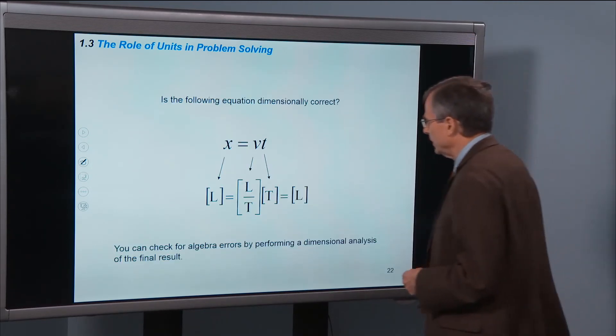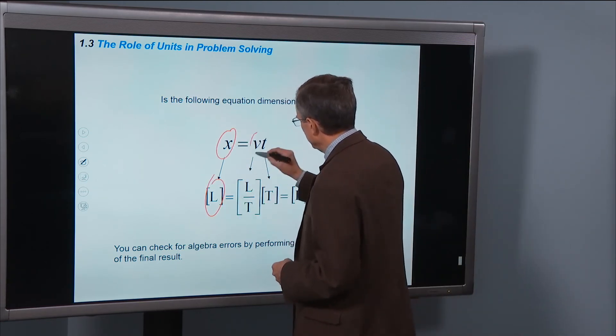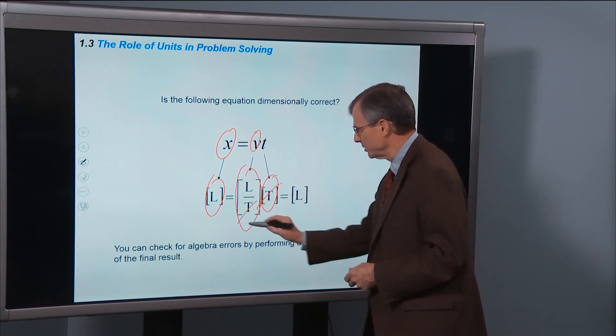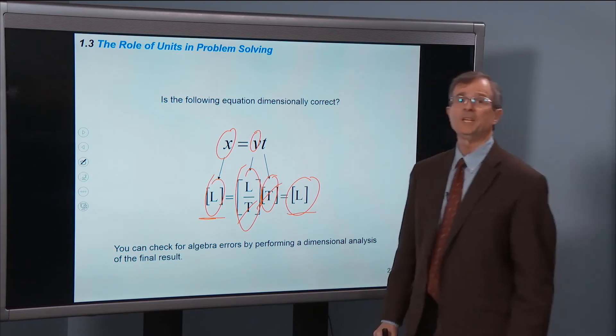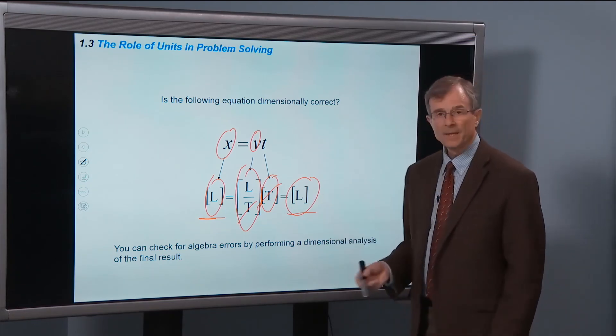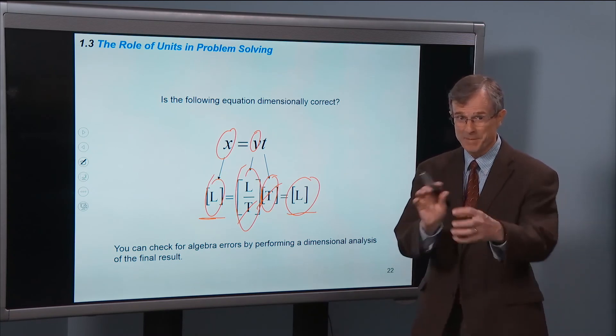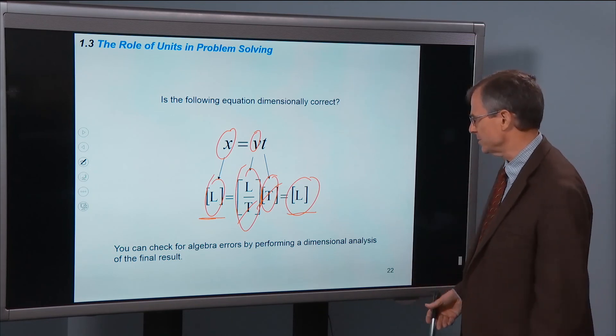How about this one? Unit of length, unit of velocity - a length divided by time times unit of time. The units of time cancel out. We get units of length equal units of length. Happy day. That equation is not necessarily correct, but its units match up. That's a good indication you're on the right track and probably have the right equation. You can check for algebra errors by performing dimensional analysis of the final result.